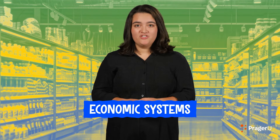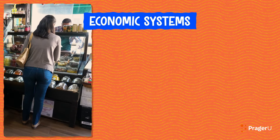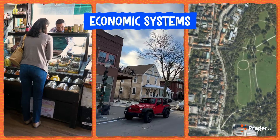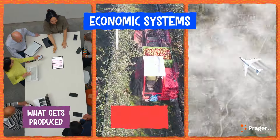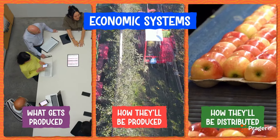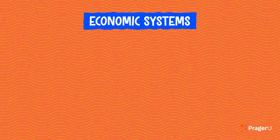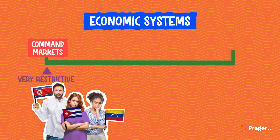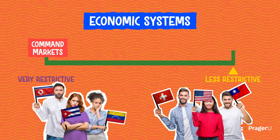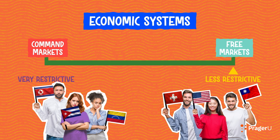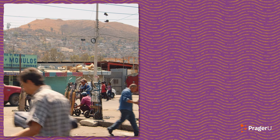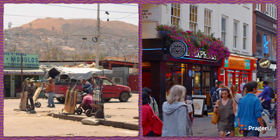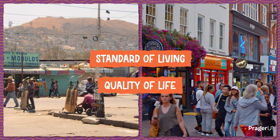What's happening? Well, what you're observing are economic systems in action. Economic systems are how individuals, communities, and entire countries organize what goods and services get produced, how they'll be produced, and how they'll be distributed. These systems are characterized along a spectrum. On one end, there are very restrictive markets called command markets. On the other end, there are less restrictive markets called free markets or capitalist markets. Where a country lands along that spectrum could have major consequences to its standard of living and quality of life.